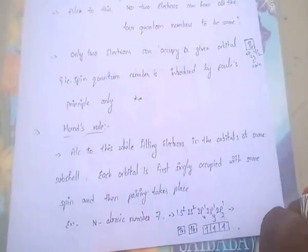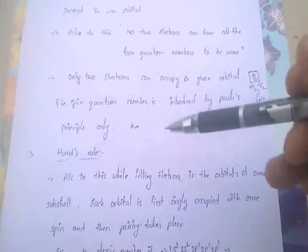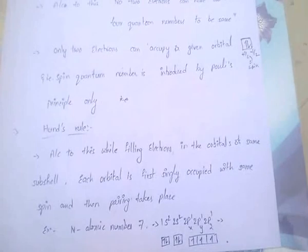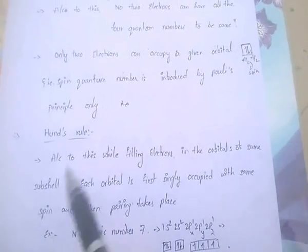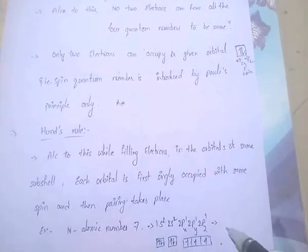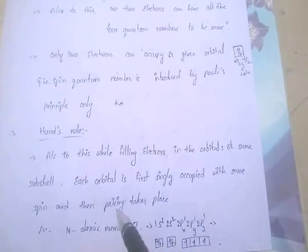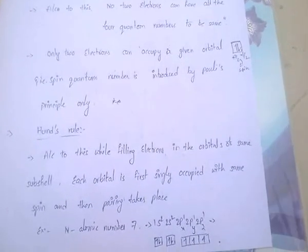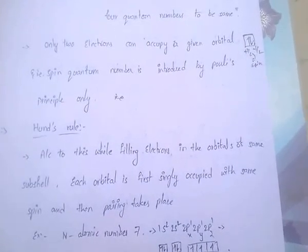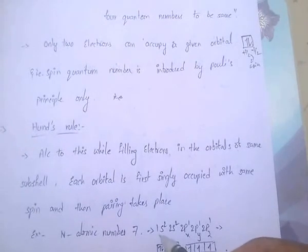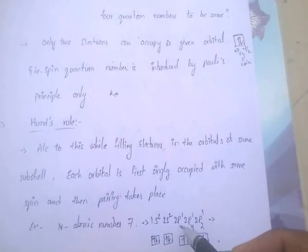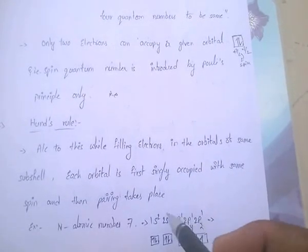Next principle: Hund's Rule. According to Hund's Rule, while filling electrons in the orbitals of the same subshell, each orbital is first singly occupied with the same spin, and then pairing takes place. For example, take nitrogen with atomic number 7. Its configuration is 1s², 2s², 2px¹, 2py¹, 2pz¹ — total seven electrons.